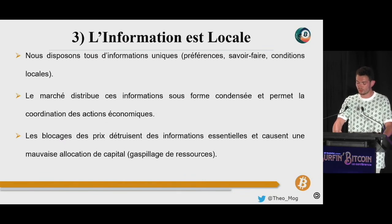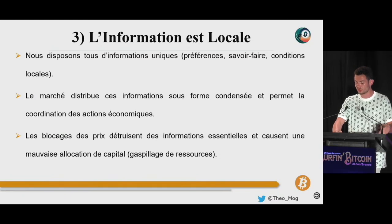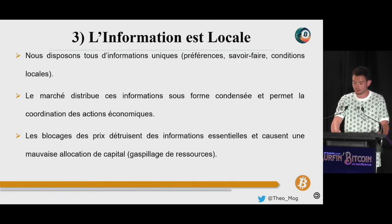Chaque jour, la presse nous relate une nouvelle mesure de blocage des prix, indiquant que les hommes politiques et les banquiers centraux ne comprennent rien au rôle crucial que jouent les prix de marché dans nos économies. Loin d'être des variables que l'on peut ajuster pour contenter les électeurs, les prix sont le système d'information du capitalisme. Nous détenons tous des informations uniques concernant nos désirs, leur intensité, la disponibilité de certaines ressources ou même l'efficacité de certaines méthodes de production. C'est là mon troisième axiome : l'information est locale.